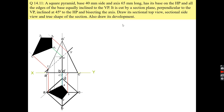In the next portion, we already discussed this when learning the section of the solid. The same example I am taking now — only the development part is remaining. The question reads: a square pyramid with base 40 m side, axis 65 m long, has its base on the HP and all edges of the base equally inclined to the VP. It is cut by a section plane perpendicular to the VP and inclined at 45 degrees to the HP. Draw the section, top view, side view, true shape of the section, and the development. The front view, top view, side view and true shape are already completed.